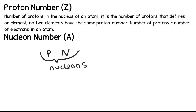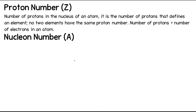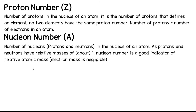Since nucleons - both protons and neutrons - have a relative mass of one, the nucleon number is actually equal to the relative atomic mass of an atom. So if you're given the nucleon number, you know the relative atomic mass. That's why the nucleon number can also be referred to as the mass number. The abbreviation for proton number is Z, and for nucleon number is A.